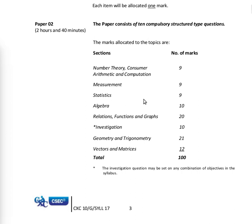Paper 2 consists of ten compulsory questions in section one. In section two, you choose two out of three. The topics covered include consumer arithmetic, measurement, statistics and graphs, relations functions and graphs, investigation, geometry and trigonometry, and vectors and matrices.